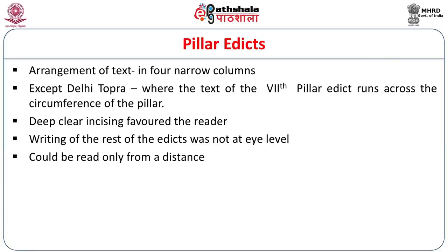The arrangement of text is in four narrow columns in the pillar edicts, except Delhi Topra where the text of the seventh pillar edict runs across the circumference of the pillar. The writing was often not at eye level, so edicts could only be read from a distance. There was an officer called the Laja Vachanika or Raja Vachanika who would read out the Vachanas — the promulgations of the emperor — aloud.